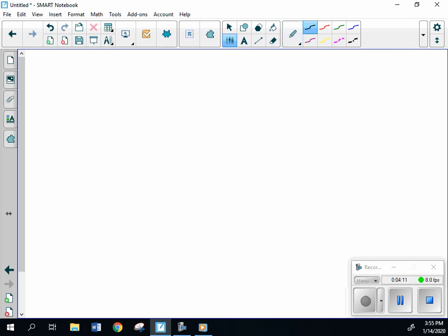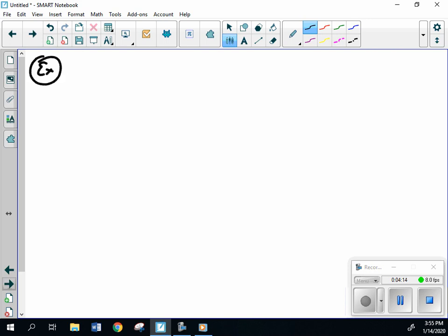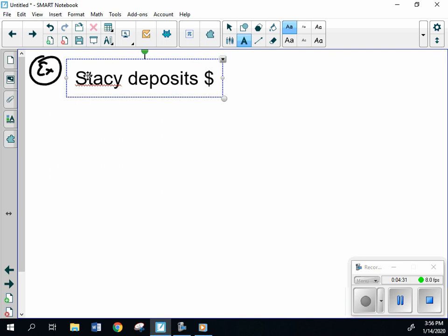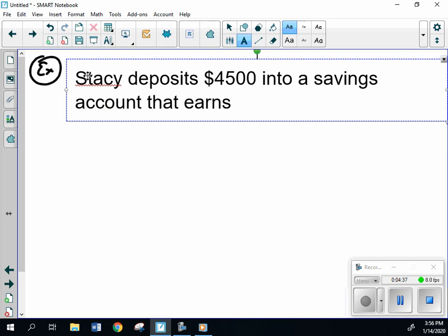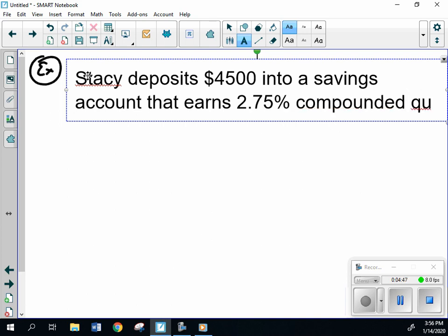So, for instance, story problem. I'm actually going to type this out so it goes a little bit faster and you can read it. Stacy deposits $4,500 into a savings account that earns 2.75% compounded quarterly. How much does she earn after 10 years?